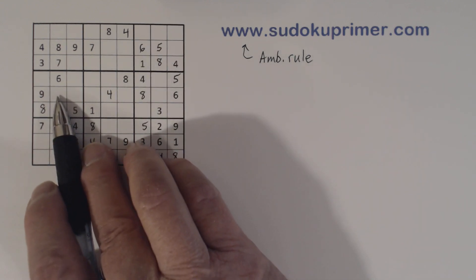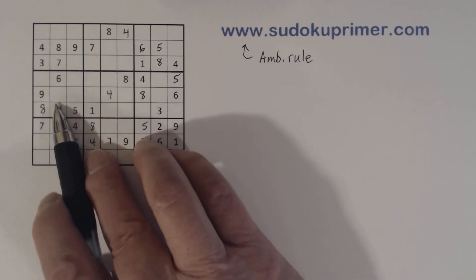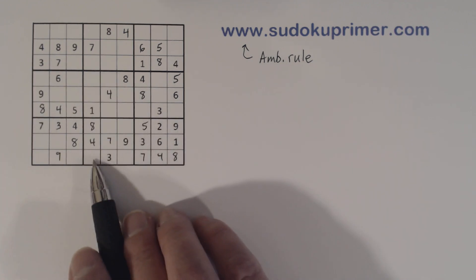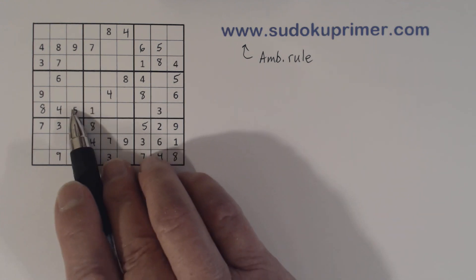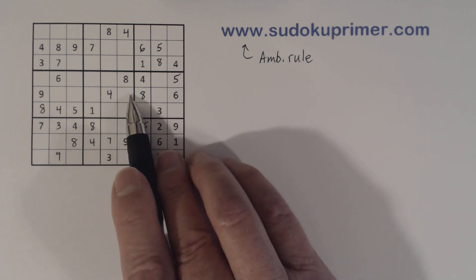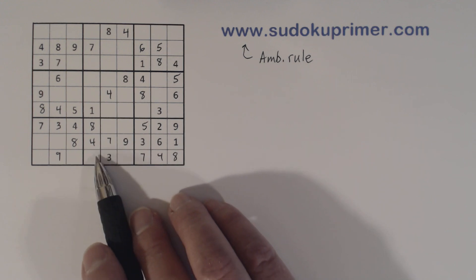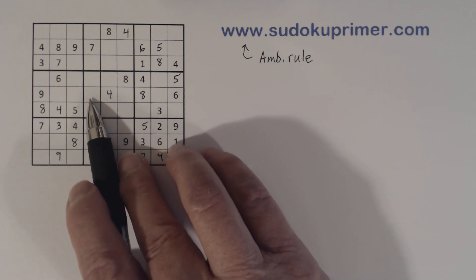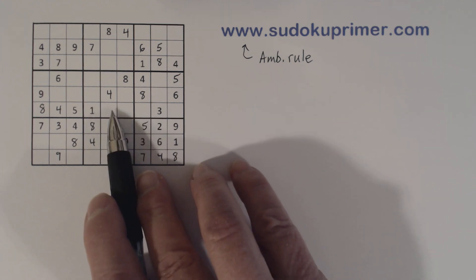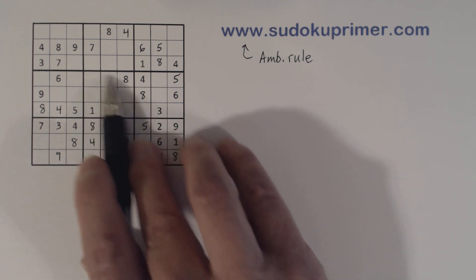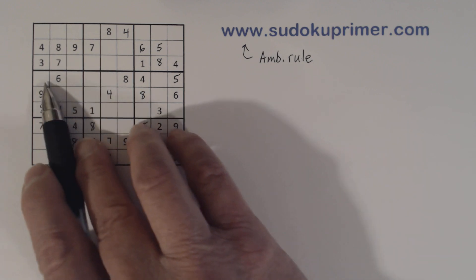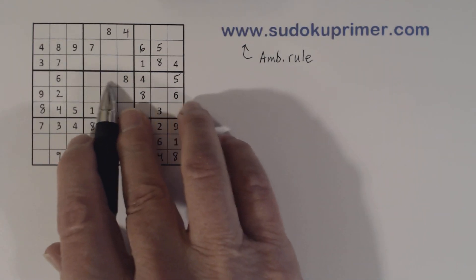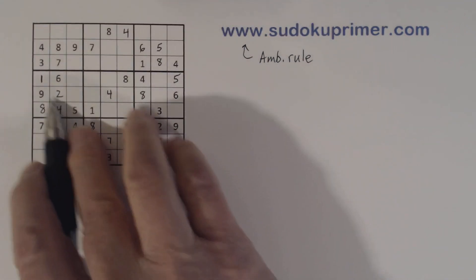Now with the 1-2 twins and the 3-7 twins here, let's see if we can find where the 2 goes in this box. We have 2-5 twins here. We have a 5 here and a 5 here, so the 5 is constrained to one of these 2 cells in box 5. Using the ambiguity rule again — 2-5 twins, 5 goes here — we know that 2 can't be here or here. We have ghost 2s here, so neither of these 2 cells can be a 2. So the 2 in box 5 is constrained to one of these 2 cells. Therefore, with these 1-2 twins, we know this has to be a 2. This can't be a 2 because of these ghost 2s. So now we can solve our 1-2 twins there.